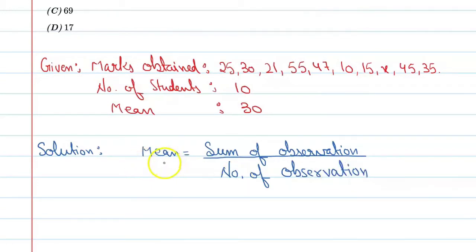So we know that mean is equal to 30 and number of observations are 10, and we need to find the sum of these old terms. So let's write here.